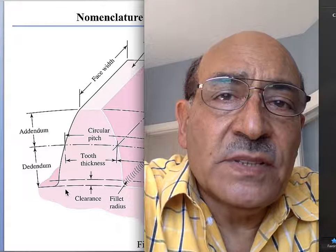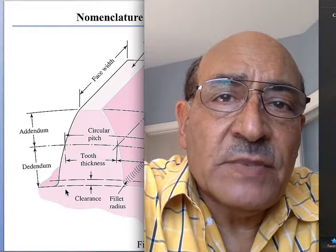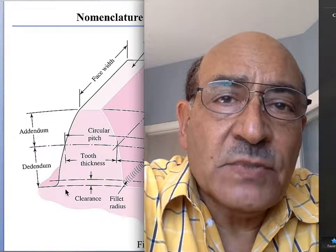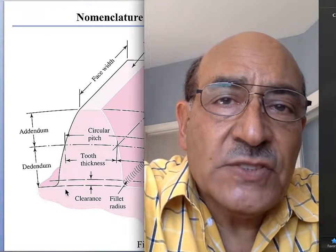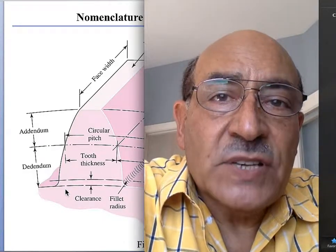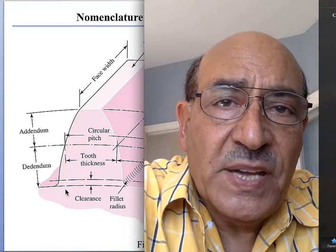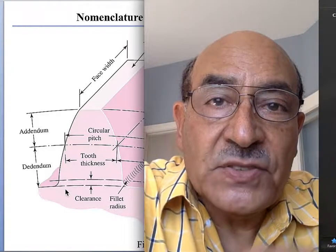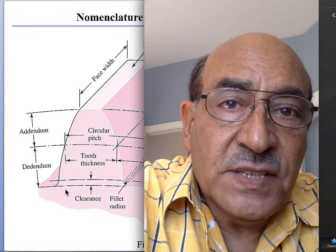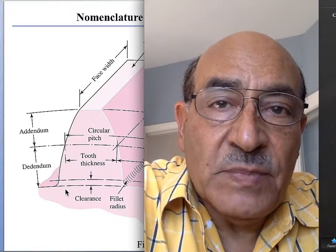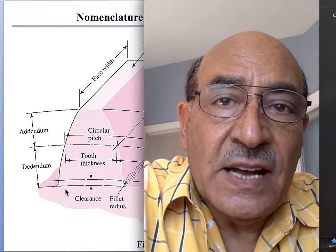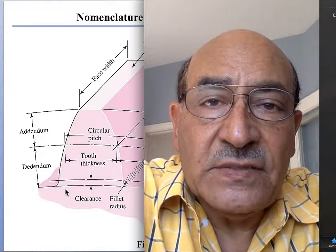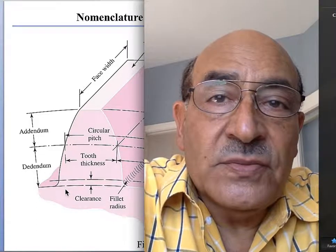If you have a gear, we must know the diameter and the number of teeth we can put on that gear. When designing, you choose a certain number of teeth on each gear. To do that, we have a parameter called the diametral pitch, which is essentially the number of teeth per inch of the gear's diameter. For example, if the diameter is eight inches and you have 40 teeth, the diametral pitch is 40 divided by 8, which equals 5. The pitch has units of one over inch.